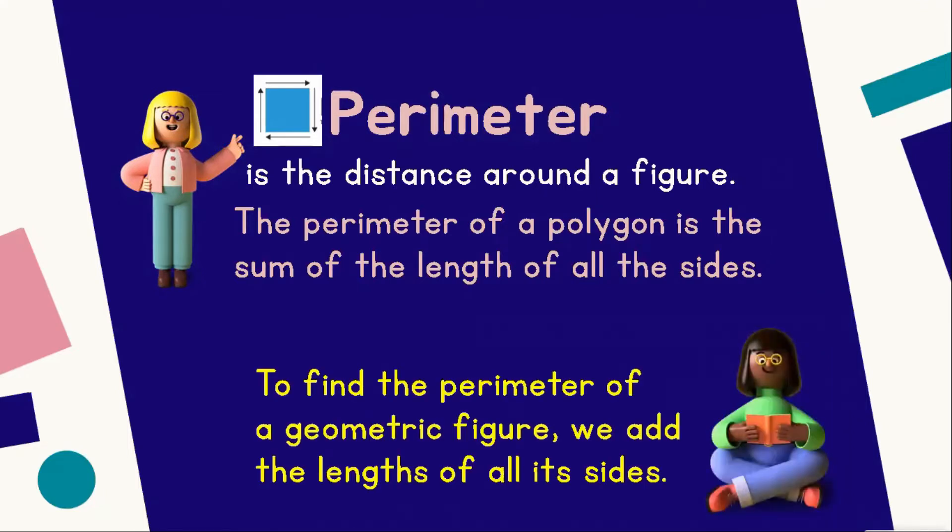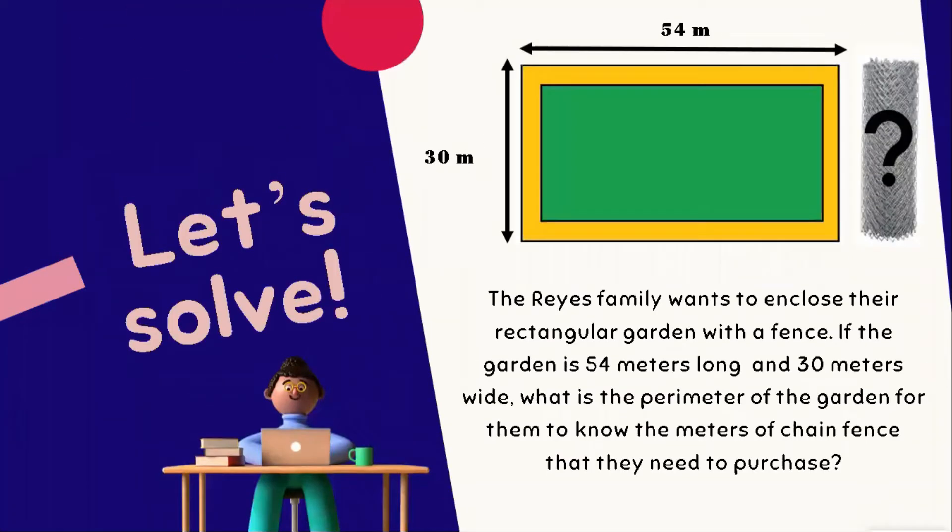To find the perimeter of a geometric figure, we add the lengths of all its sides. Let's go back to our word problem and try to solve it now.